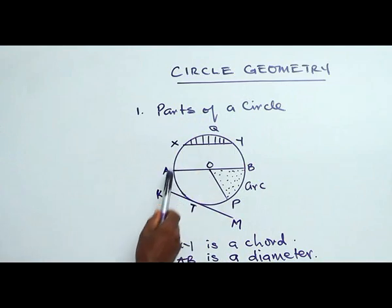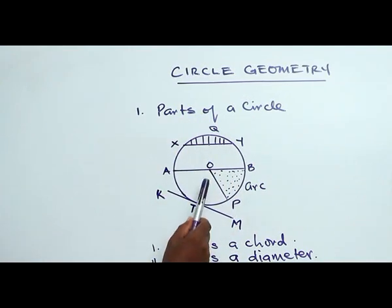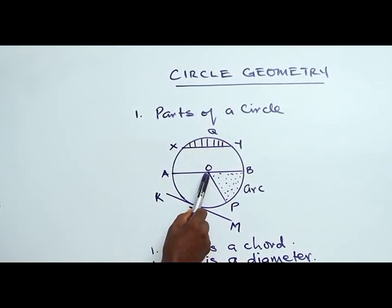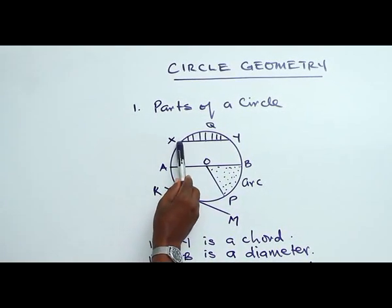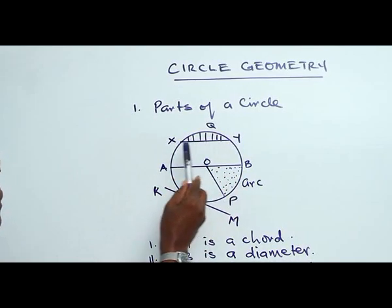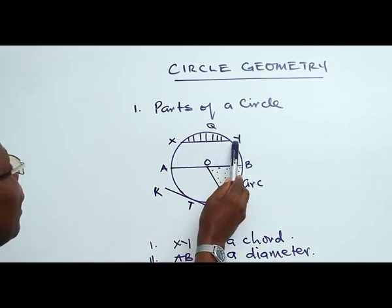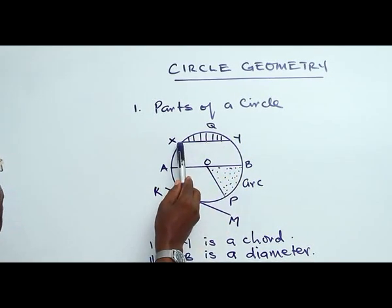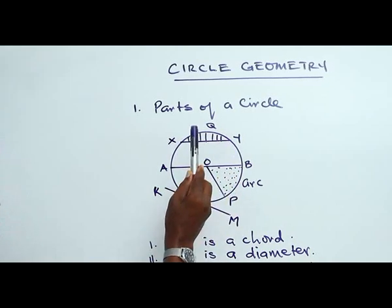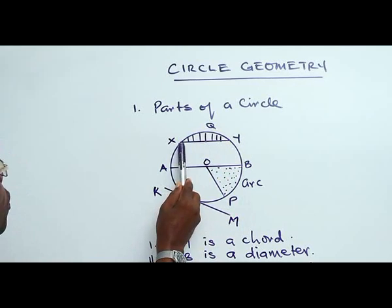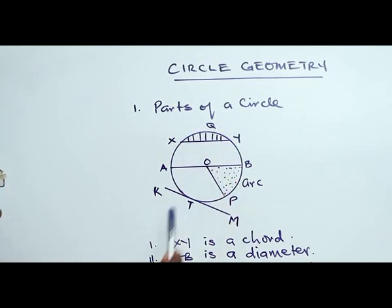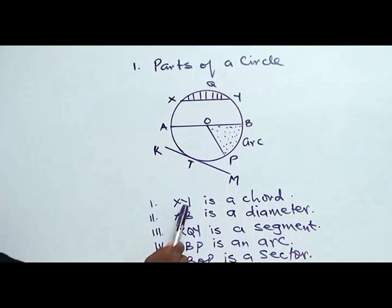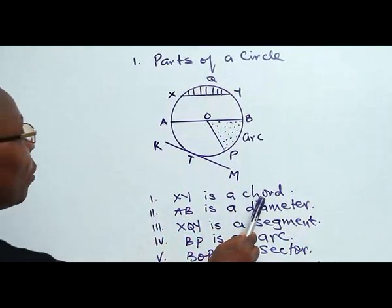Here is a circle. The center is O. We have the line SY. The line SY goes from one part of the circle to another part but not necessarily passing through the center of the circle — this is called a chord. SY is a chord.